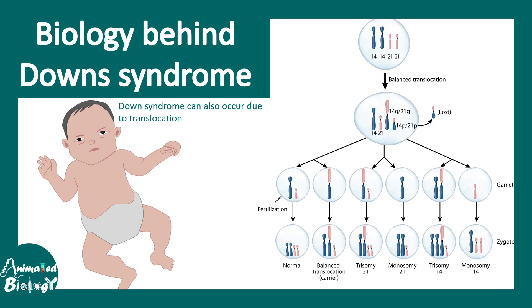Apart from non-disjunction, which is the most prevalent cause, there could also be Robertsonian translocation as a cause of Down syndrome. Between chromosomes 14 and 21 there could be translocation or interchange of segments, which could be another prevalent cause of Down syndrome.